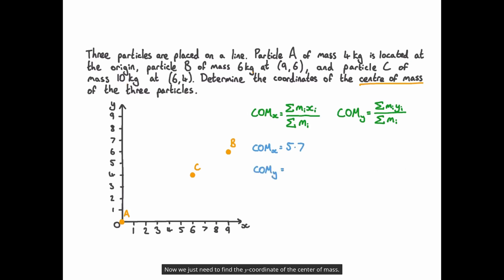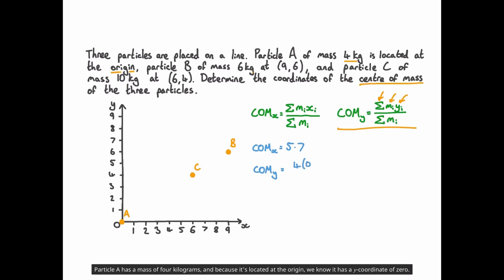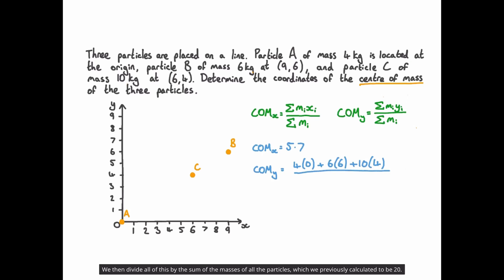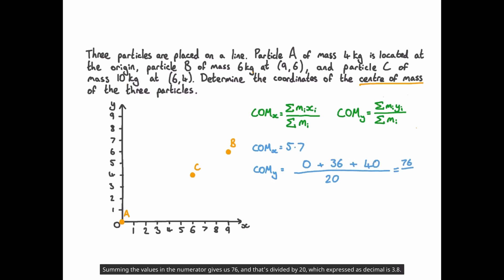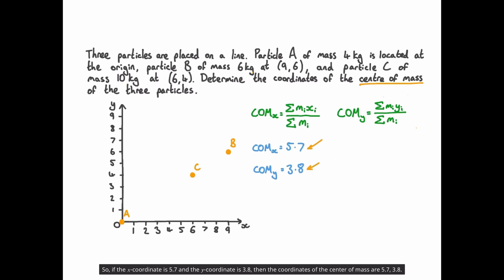Now we just need to find the y-coordinate of the centre of mass. We multiply each particle's mass by its y-coordinate and sum these together. Particle A has a mass of 4 and, because it's at the origin, a y-coordinate of 0. Particle B has a mass of 6 and a y-coordinate of 6, and particle C has a mass of 10 and a y-coordinate of 4. We divide all of this by the sum of the masses, which is 20. Evaluating the numerator: 0 plus 36 plus 40 equals 76. So the y-coordinate is 76 over 20, or 3.8. The coordinates of the centre of mass are therefore 5.7, 3.8.